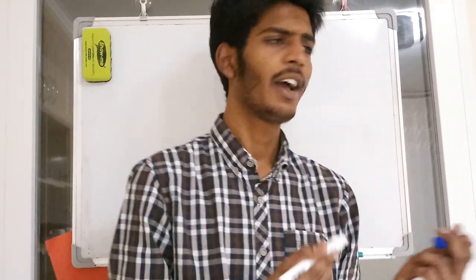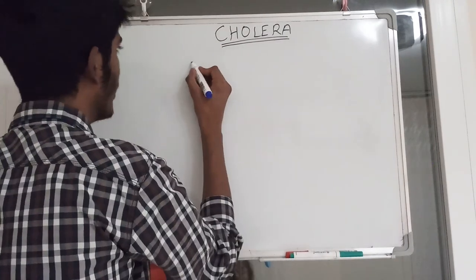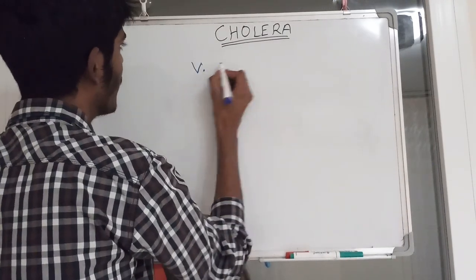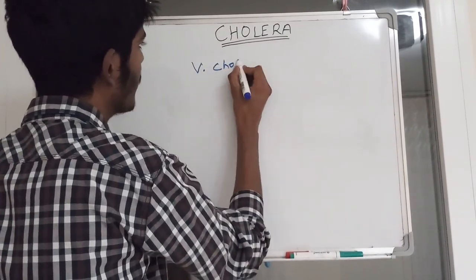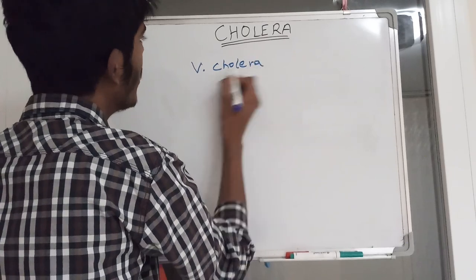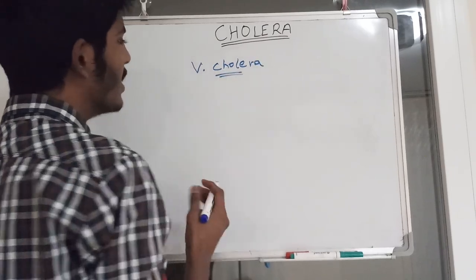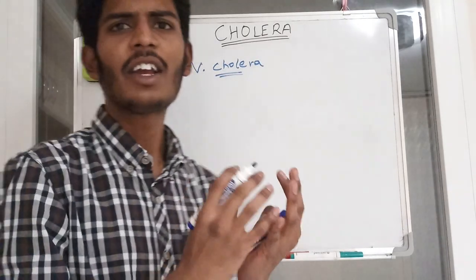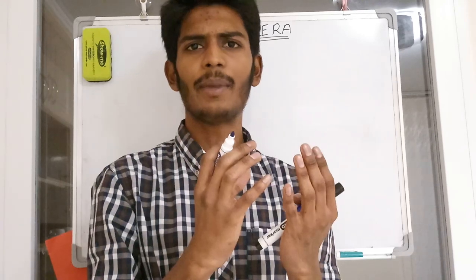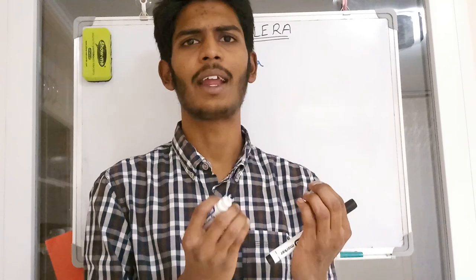The diarrhea is a very severe form. Vibrio cholerae generally causes severe epidemics. Once there is an outbreak of cholera, thousands of people can die due to the cholera infection.